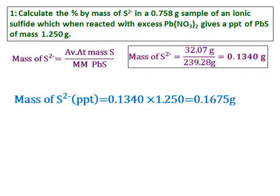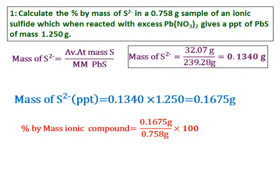So whatever the sulfide I have here, it should have come from the original compound only. And the original compound, the mass is 0.758. Therefore, the percent by mass in the ionic compound will be the mass of sulfide divided by the mass of compound, which is given over there, times 100.